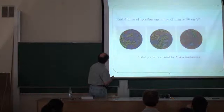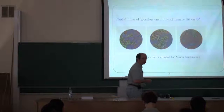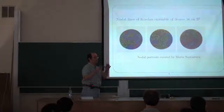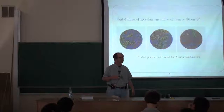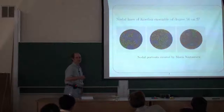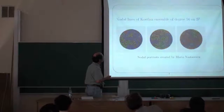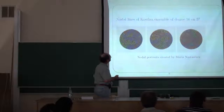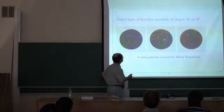The other picture was done by Maria Nastasescu — she was an undergraduate student at Princeton and this was her undergraduate project last year. This is the Kostlan ensemble of polynomials which we were talking about before this morning, and instead of projective space we look at it on the sphere. It doesn't matter so much, but it's much simpler to make pictures of something on the sphere than on the projective plane. By different colors you see zero lines of a random polynomial of degree 56.